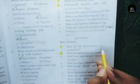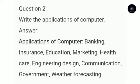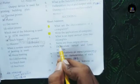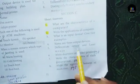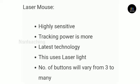What are the characteristics of a computer? Monitor, laser printer, speakers — it is more than one answer. Next, differentiate optical and laser mouse. Optical and mechanical versus laser are given.